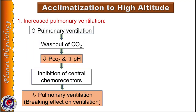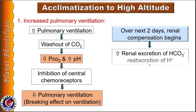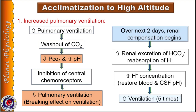Hyperventilation also removes excess carbon dioxide, leading to respiratory alkalosis. Decreased partial pressure of carbon dioxide inhibits central chemoreceptors and decreases ventilatory drive. If the person continues to stay at high altitude, within two days renal compensation begins — kidneys excrete more bicarbonate ions and conserve hydrogen ions. This corrects the pH of blood and CSF, and respiratory drive is maintained.